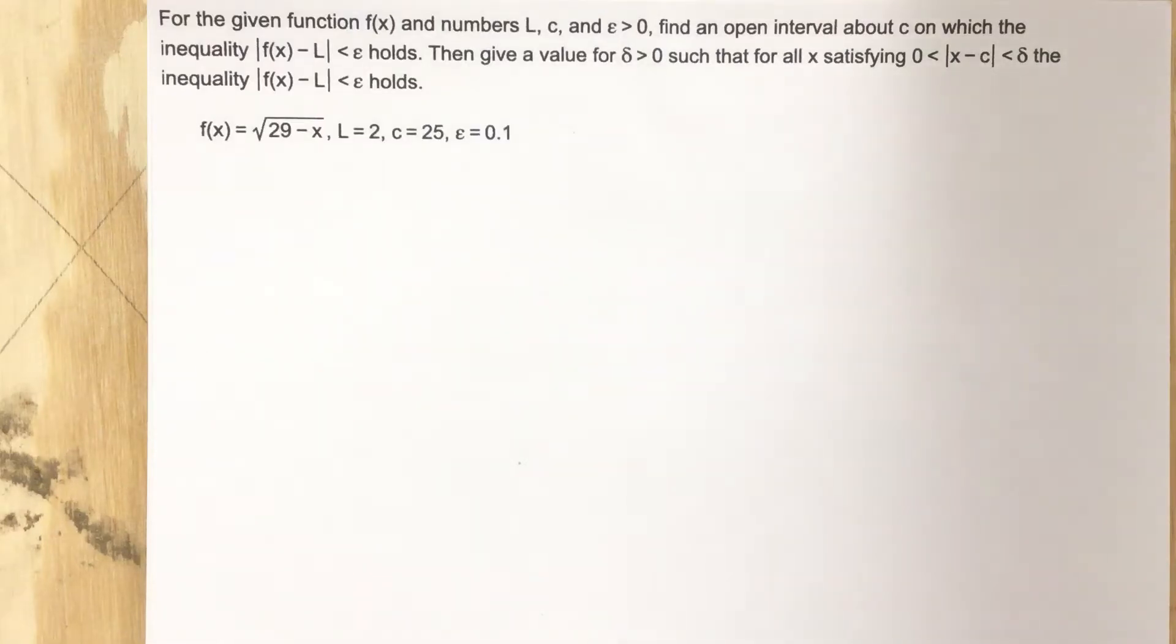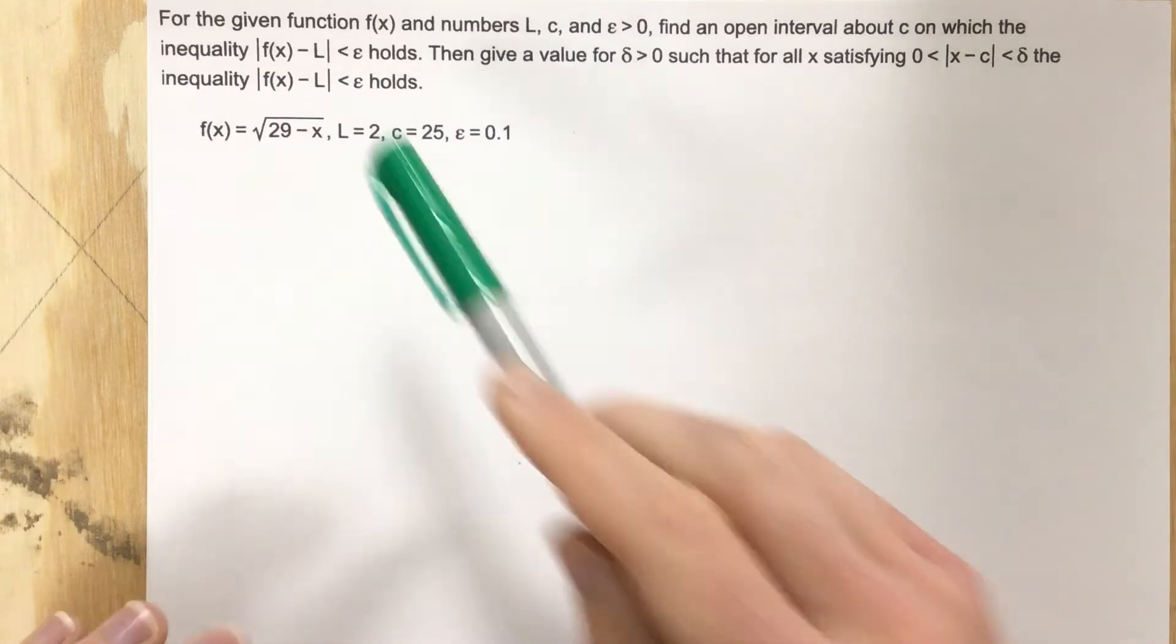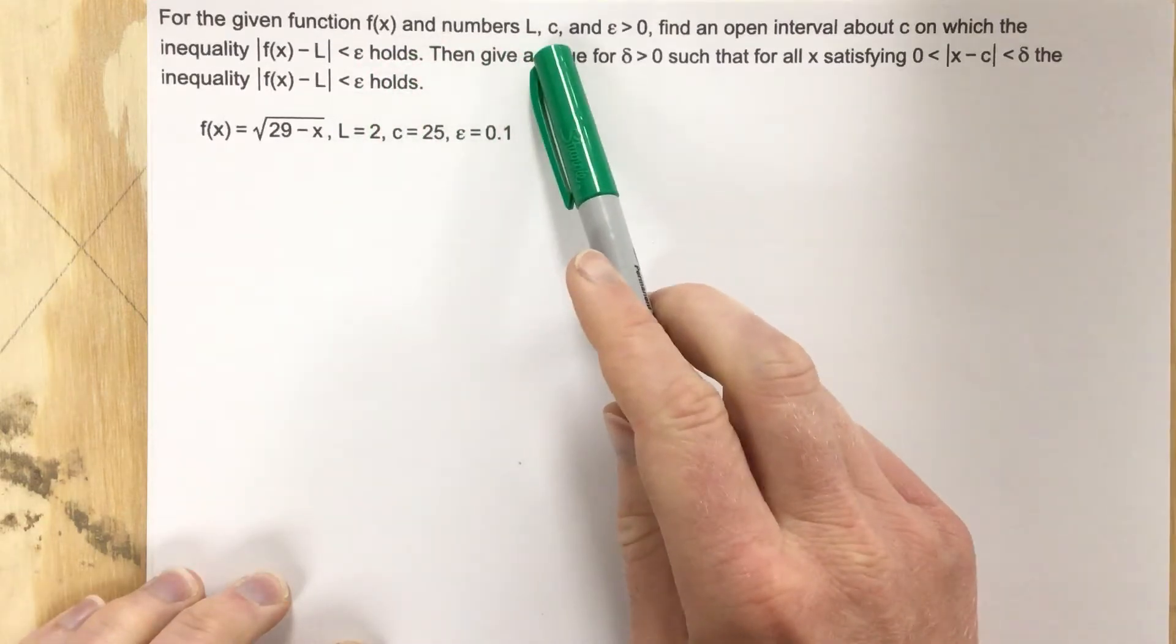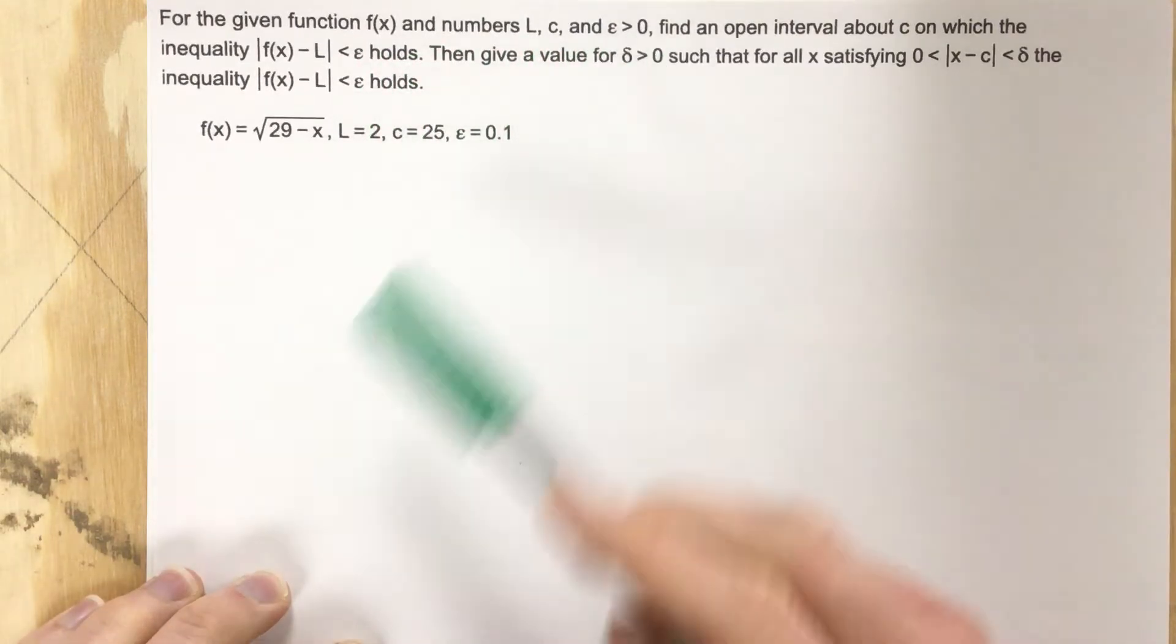This is problem number 5 for section 2.3. In this problem, for the given function f(x) and numbers L, c, and epsilon greater than 0, find an open interval about c.